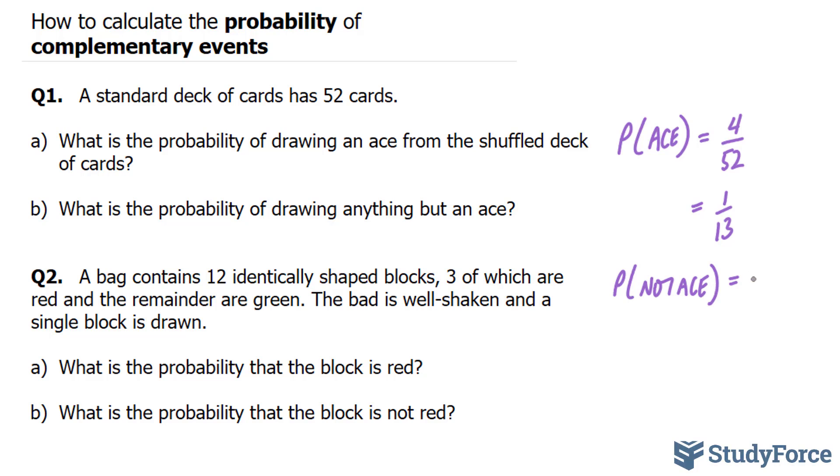And what you do is you take 1, which is the whole deck of cards, and you subtract it by the probability of obtaining an ace. And you have a fraction 1 minus 1 over 13. To subtract these two numbers together, we have to find a common denominator.